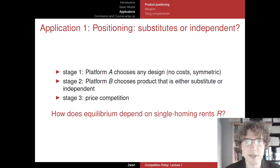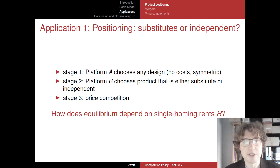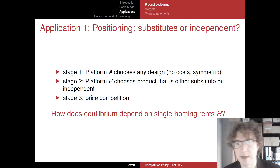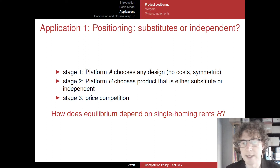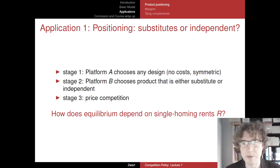The model has two platforms, A and B. In the first stage, the strategy consists of your choice of product design. Platform A chooses some type of product — this is a no-costs benchmark — and platform B chooses some other good which might either be a complete substitute, where a consumer would only want one of the two, or a completely independent good. We assume these two goods are symmetric in terms of demand and costs.